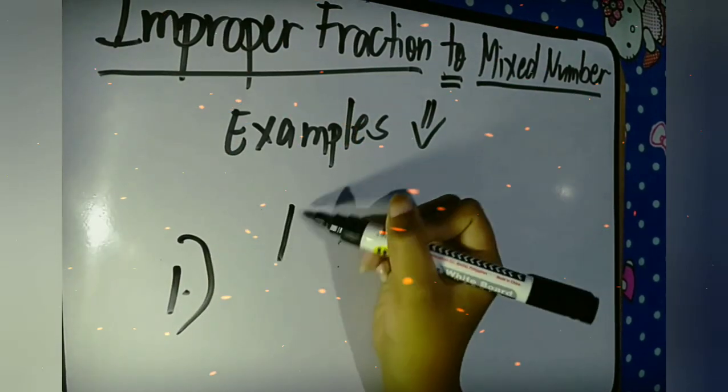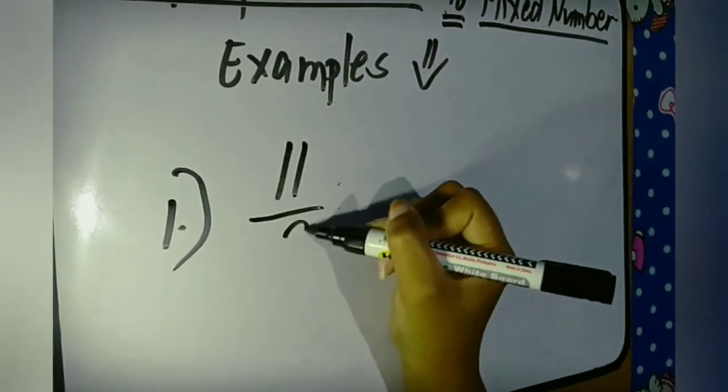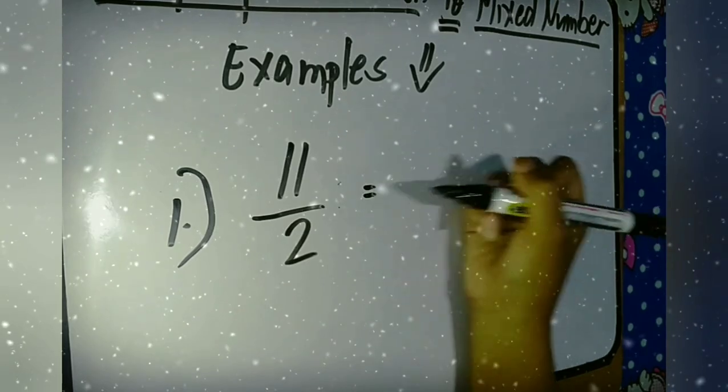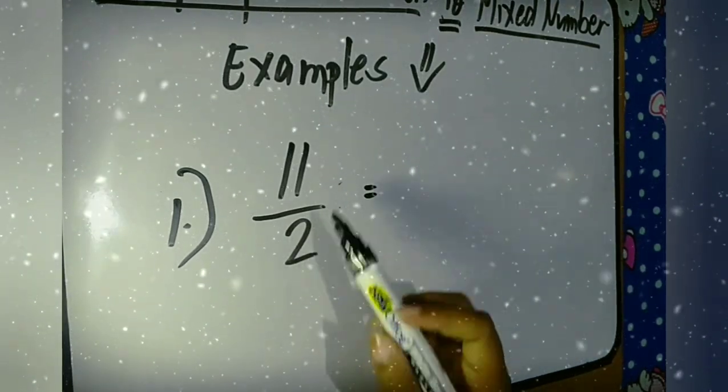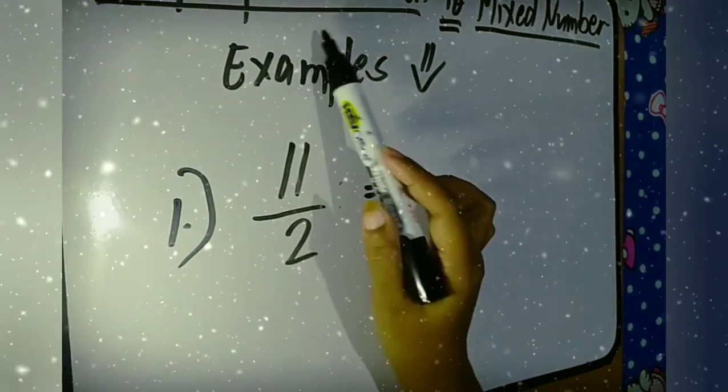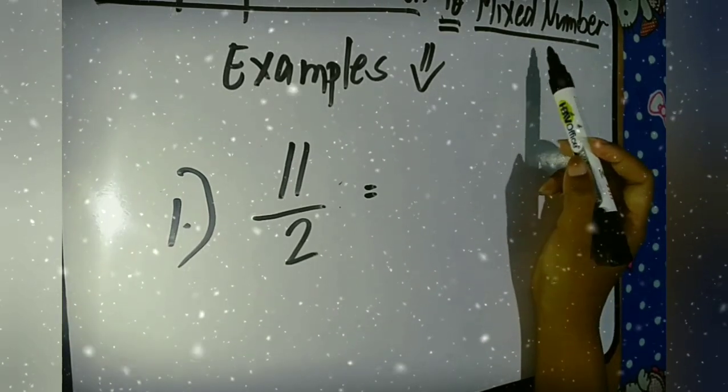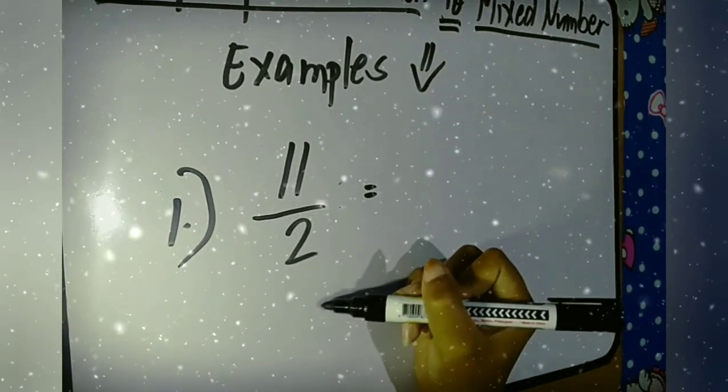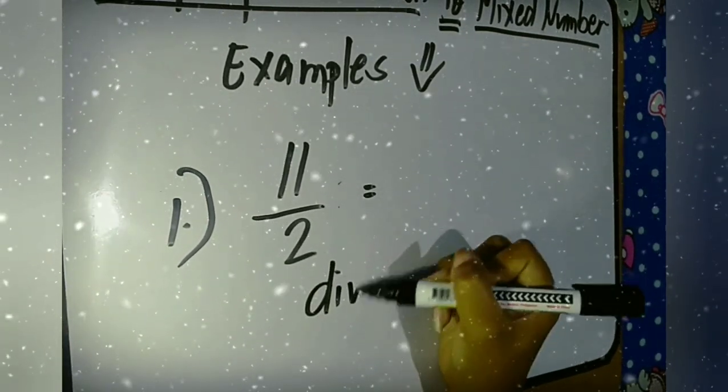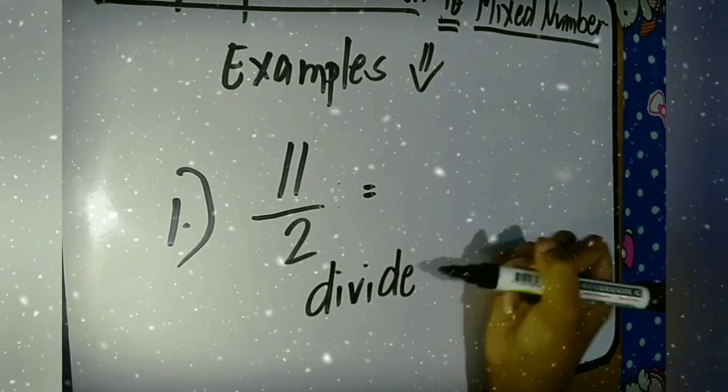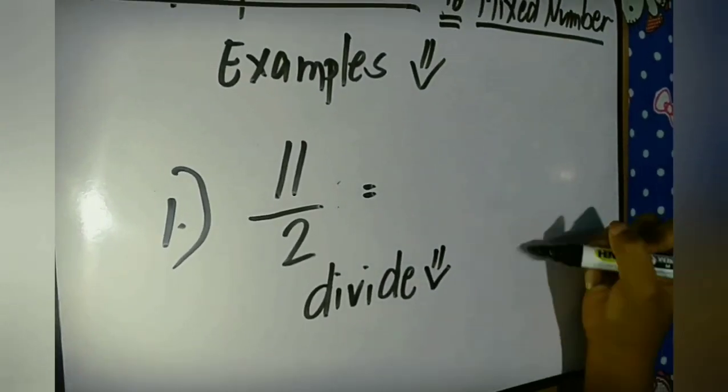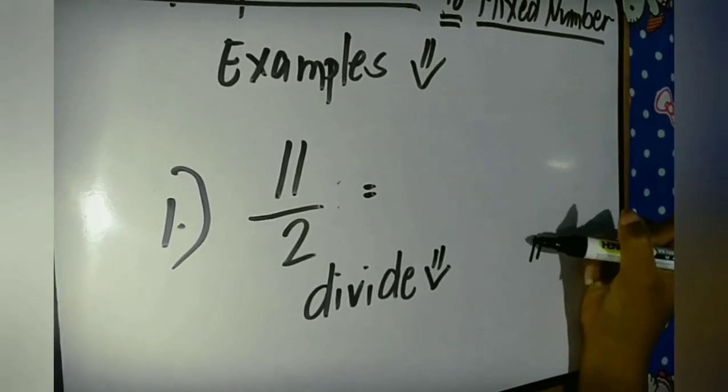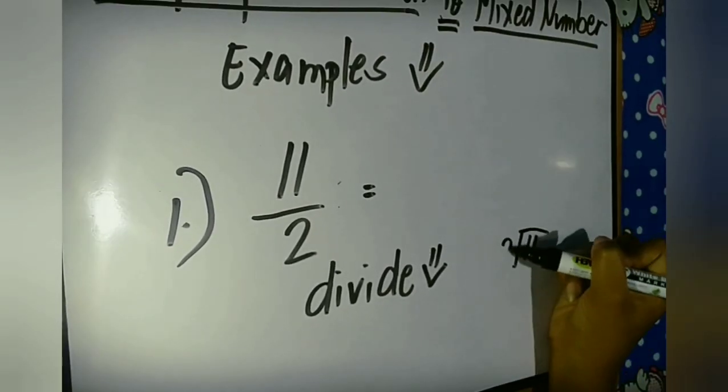Let's have examples. Example number 1. What is the mixed number of the improper fraction 11 over 2? What we're going to do is just divide. That's right, we will just divide 11 divided by 2.